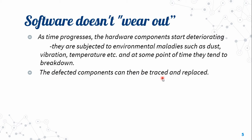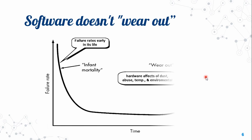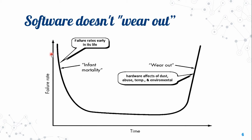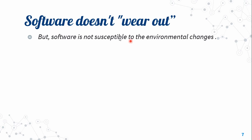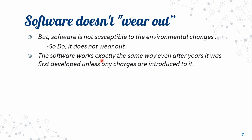Defected hardware components can be traced and replaced. Software, however, has no physical effect from the environment, so it does not wear out. The software works exactly the same way after years as when it was first developed, unless any changes are introduced to it.